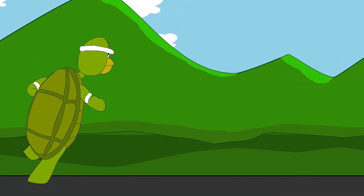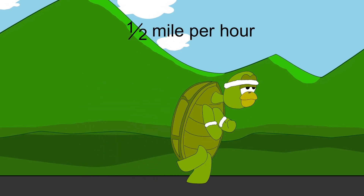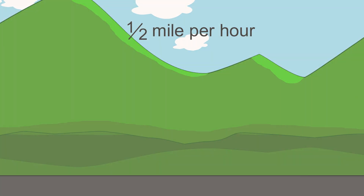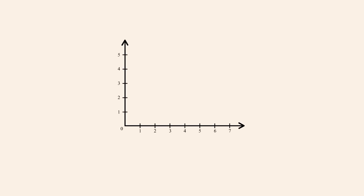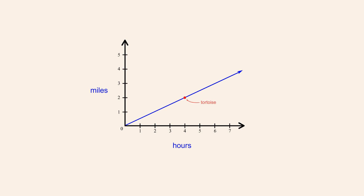As the race begins, the tortoise starts down the road at one-half mile per hour — a very brisk pace for a tortoise. We can graph the tortoise's distance from the starting point as a function of time, letting the vertical axis represent distance and the horizontal axis represent elapsed time. When elapsed time is zero, the tortoise's distance is also zero. Since he is traveling at a constant speed, his distance increases linearly as a function of time.